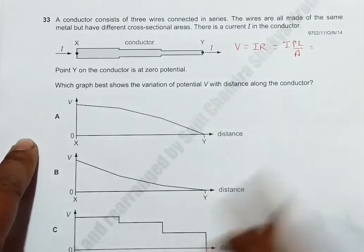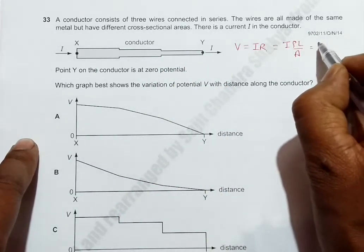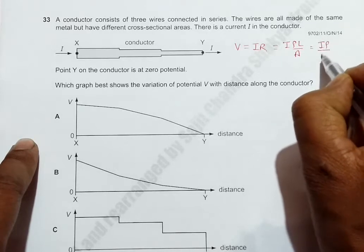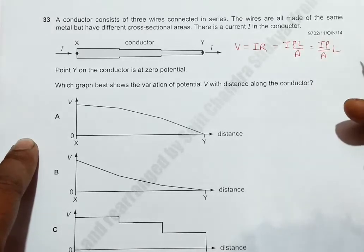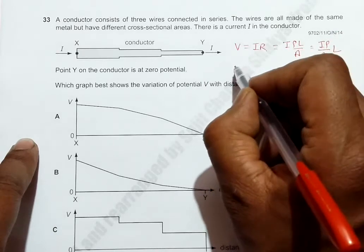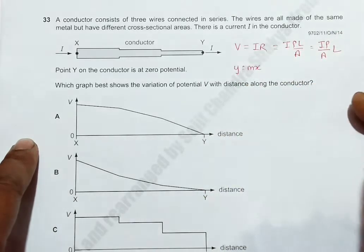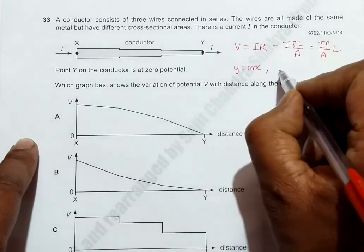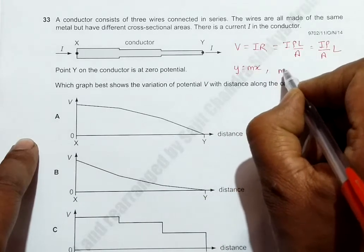Since we have the distance here on the graph, I can separate it as Iρ/A times L. If I compare this with y equals mx where m is the gradient, we will have m equals Iρ/A.